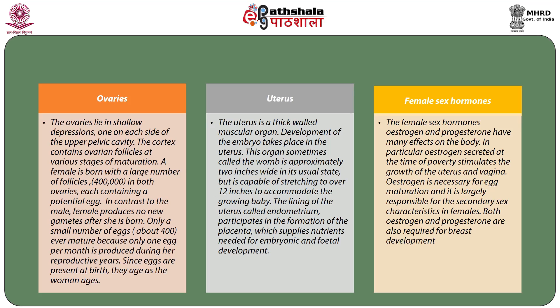The female sex hormones — estrogen and progesterone — have many effects on the body. In particular, estrogen secreted at the time of puberty stimulates the growth of the uterus and vagina. Estrogen is necessary for egg maturation and is largely responsible for the secondary sex characteristics in females. Both estrogen and progesterone are also required for breast development.